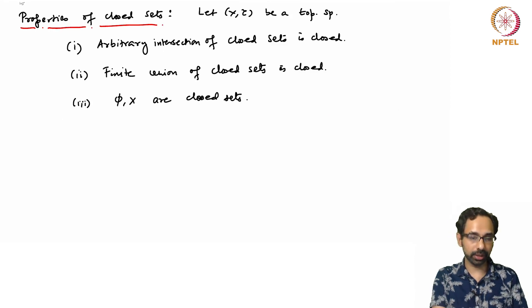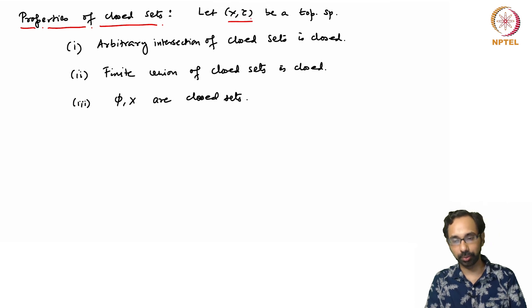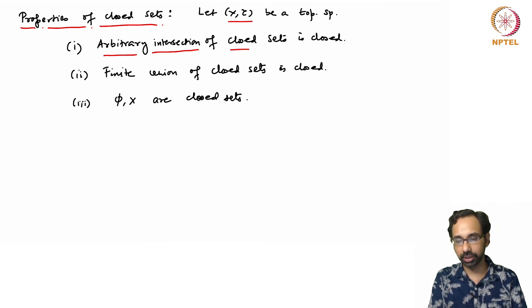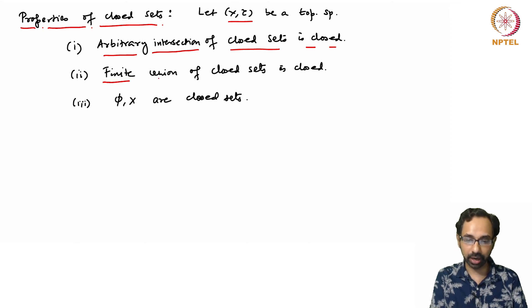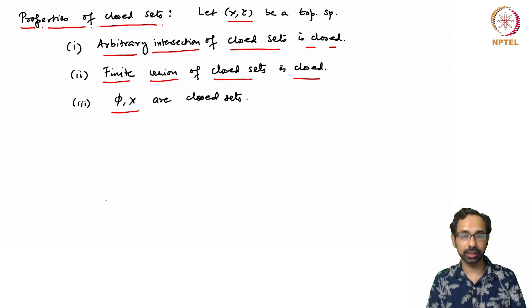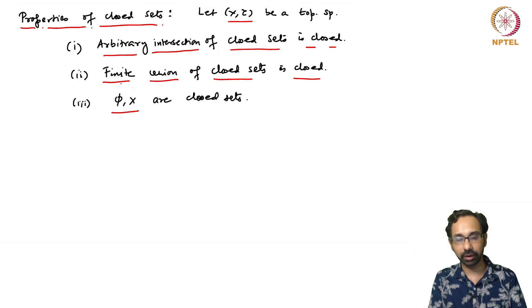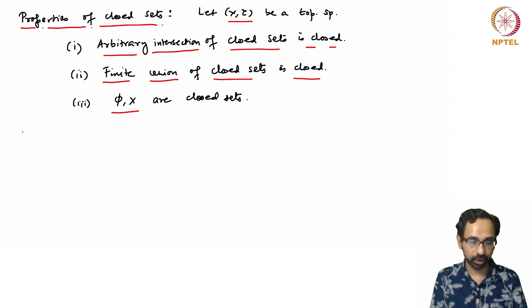Here are some properties of closed sets. Fix a topological space X with topology τ. First, arbitrary intersections of closed sets are closed. Second, finite unions of closed sets are closed. Third, both the empty set ∅ and X itself are closed. Note the duality with open sets: arbitrary unions of open sets are open, and finite intersections of open sets are open. All these properties follow from De Morgan's laws.